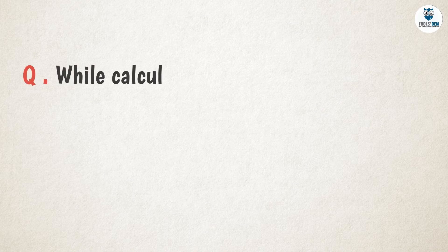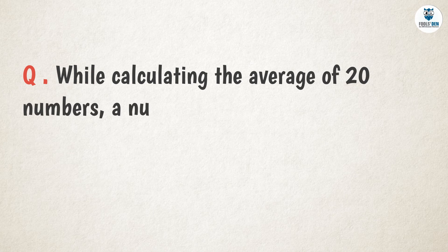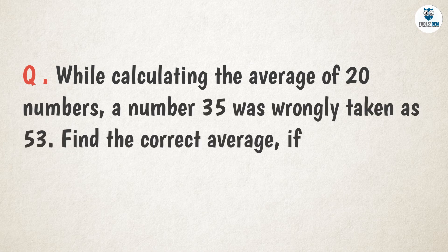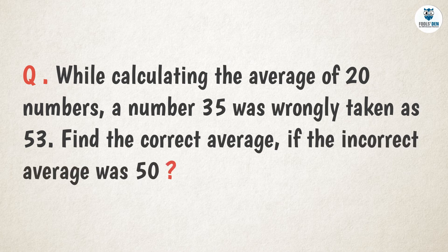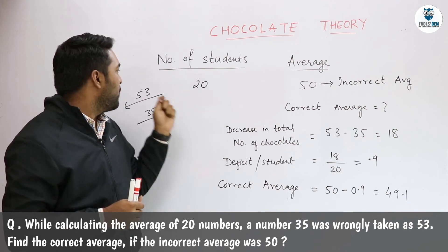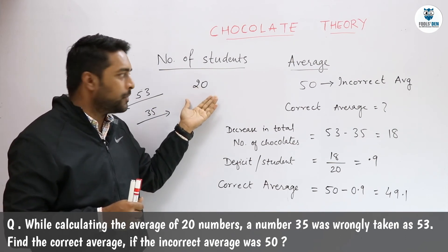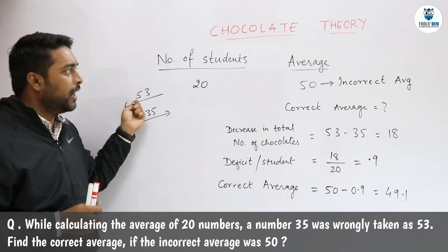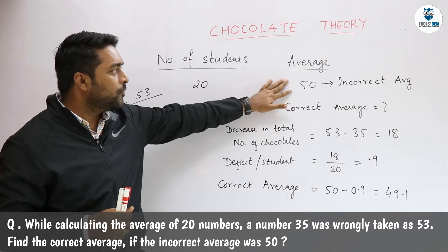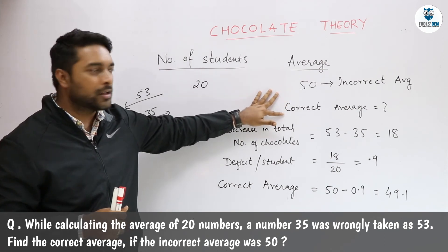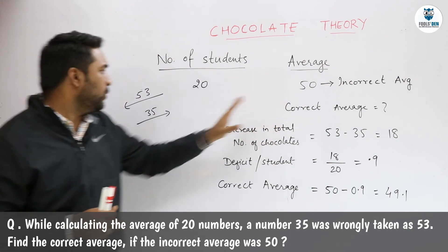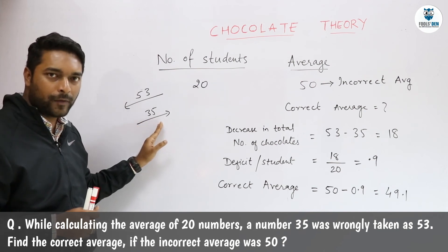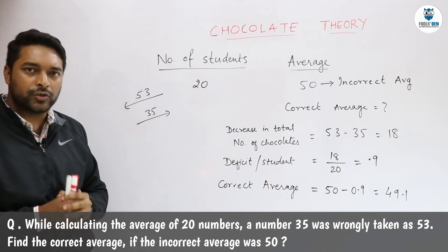Now let us see another question: while calculating the average of 20 numbers, a number 35 was wrongly taken as 53. Find the correct average if the incorrect average was 50. We have to exclude 53 and in its place include 35. Let us see how we can solve this question using chocolate theory.